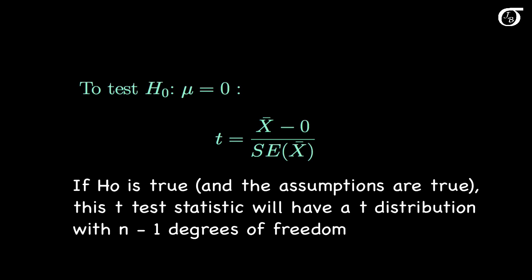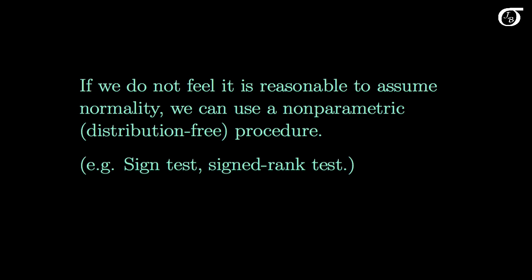If the null hypothesis and the assumptions are true, this test statistic would have a t-distribution with n minus 1 degrees of freedom. So we would find our p-value from that t-distribution with n minus 1 degrees of freedom.